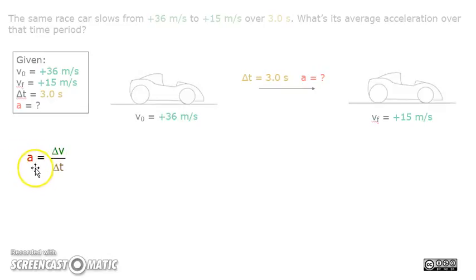So the formula we need to use is acceleration equals to the change of velocity over the change of time, which is final velocity minus initial velocity divided by the time period.